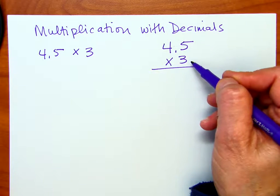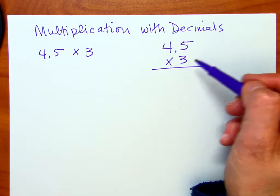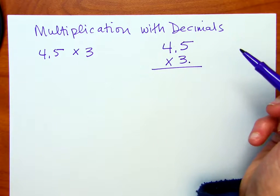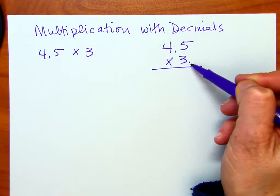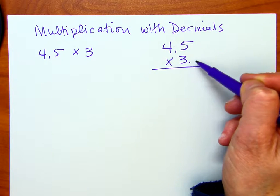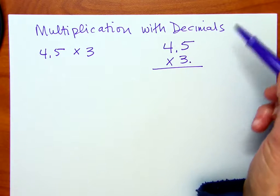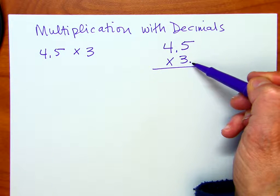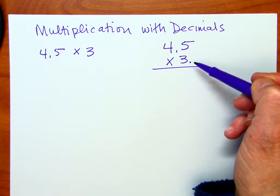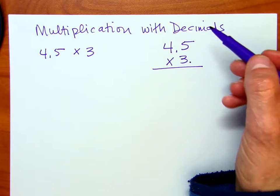Also note that I'm not lining up the decimal points. With this 3, the decimal would ordinarily be after the 3. When we only have a single digit without any decimal numbers, we normally don't write the decimal number. But I just wanted you to notice that we're not lining up the decimal points like you would with addition or subtraction. Moving on, we're going to go ahead and multiply.